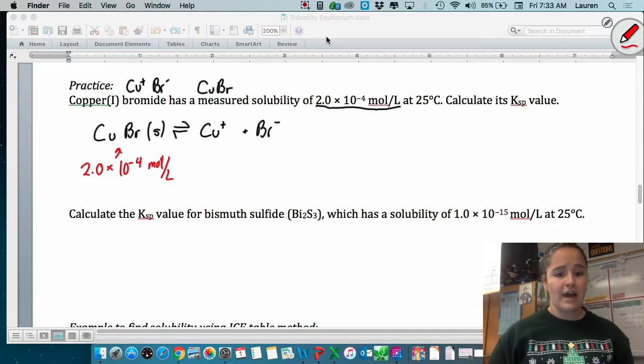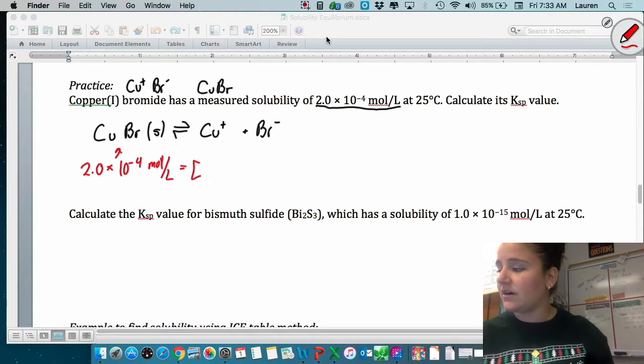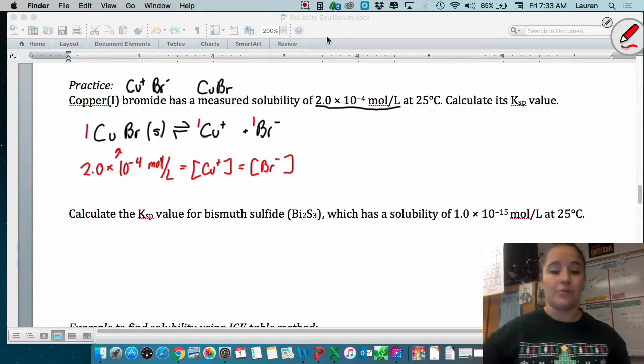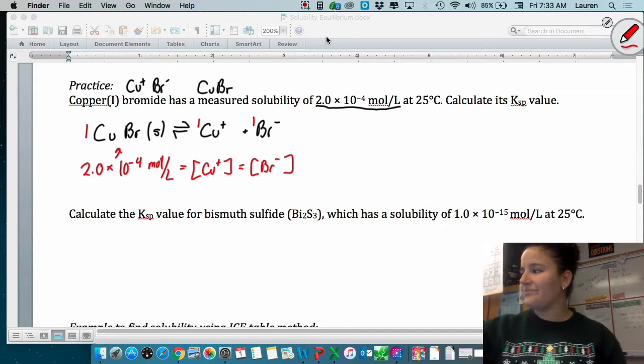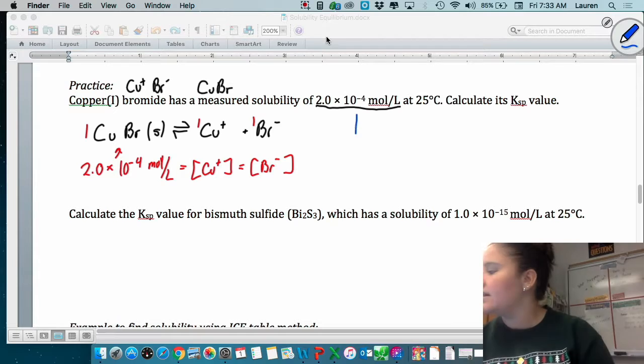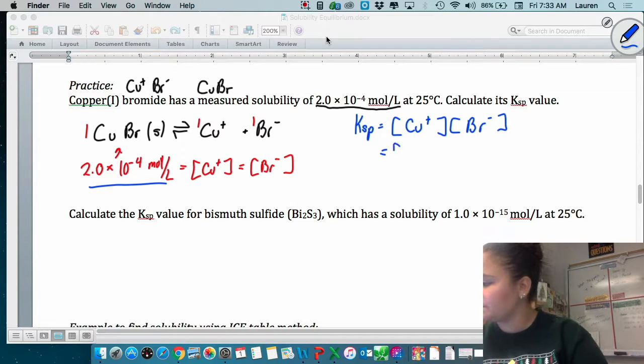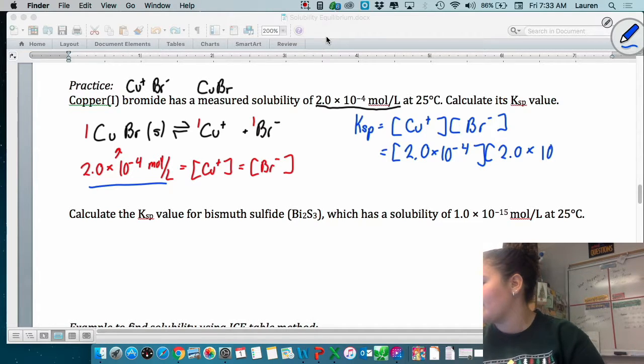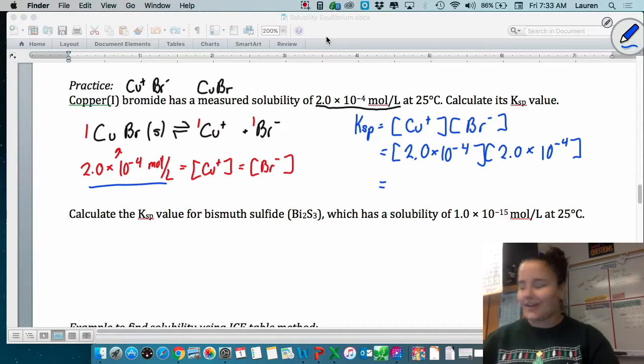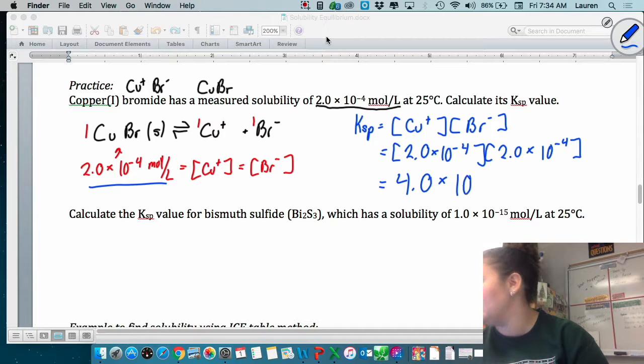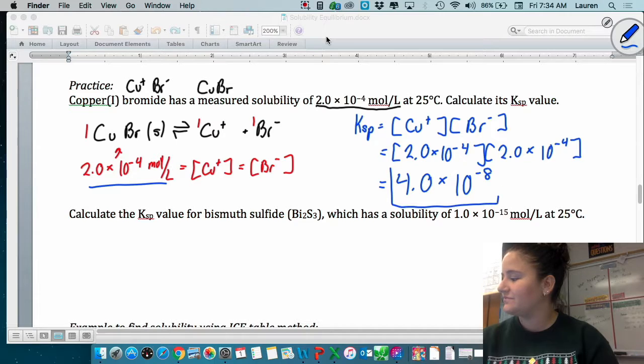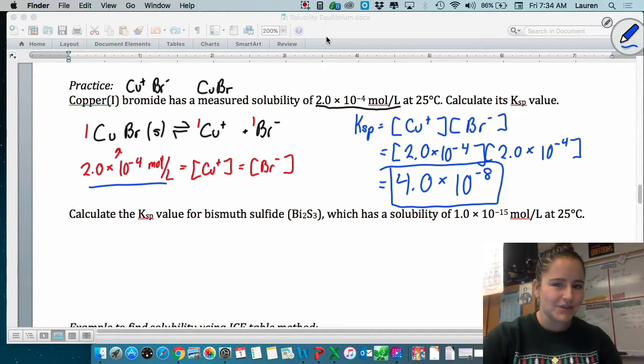So if we have that much of the copper bromide dissolving, that's also going to equal our concentration of our copper ions and our concentration of our bromide ions. Because it's just a 1 to 1 to 1 ratio. So let's calculate our Ksp. First, we need to write the expression. Ksp equals the concentration of copper+ multiplied by the concentration of bromide-. Substitute in our concentration. Plug it into your calculator and you get 4.0 times 10 to the negative 8.